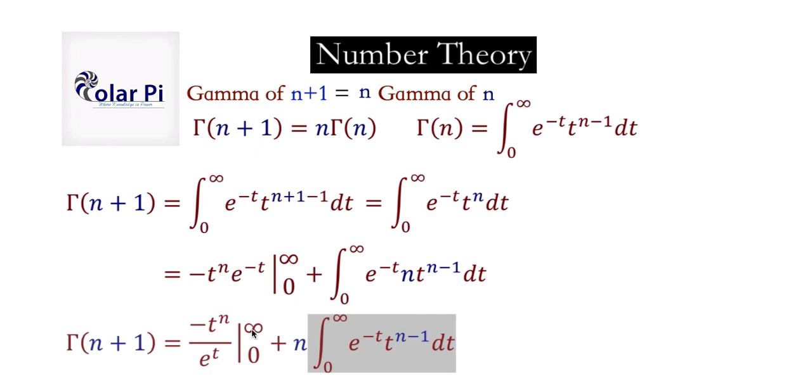If we plug in infinity, then e to the t is going to overwhelm t to the n—e to the t is going to grow much faster than t to the n. So when we plug in infinity, this goes to zero. Then we'll have minus plugging in zero. When we plug in zero, immediately the numerator is zero, so basically this evaluation is zero minus zero, or zero.